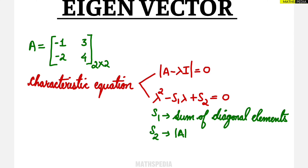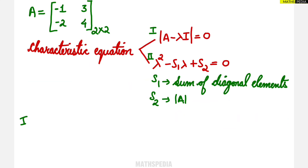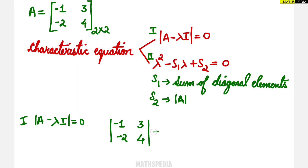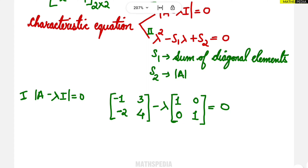Let us do Method 1 first and then Method 2 — both answers should match. Starting with Method 1, that is A minus lambda I, equated to zero. The matrix A is given as [-1, 3; -2, 4]. So we compute A minus lambda times I, where I is the 2×2 identity matrix. Both are 2×2 matrices, so we can subtract them.